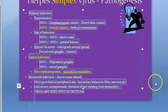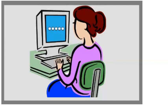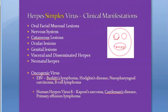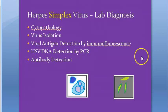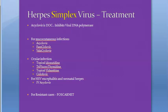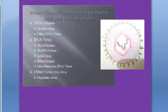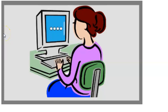Herpes simplex virus pathogenesis is done. Coming up next: clinical manifestations of herpes simplex virus, then lab diagnosis which is very important, and treatment where acyclovir is the drug of choice. After herpes simplex virus, we will look at varicella zoster, then cytomegalovirus, and Epstein-Barr virus. Continue with the next video.